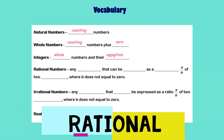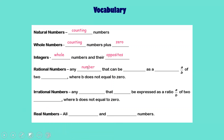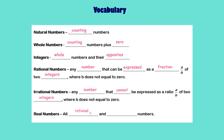Rational numbers: any number that can be expressed as a ratio or fraction of A over B of two integers, where B does not equal zero. Irrational numbers: any number that cannot be expressed as a ratio of A over B of two integers, where B does not equal zero. Real numbers are all rational and irrational numbers.